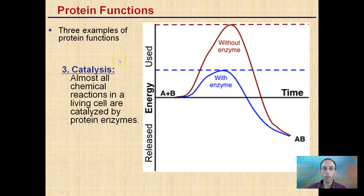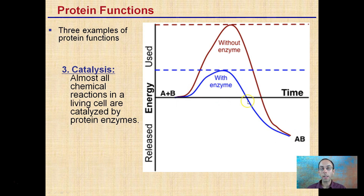Lastly, proteins can form catalysts. Almost all of the chemical reactions in a living cell are catalyzed by enzymes. What an enzyme does is reduce the amount of energy needed to reach an end product. To combine A with B without the enzyme takes a lot of energy before it produces the complex AB. With enzymes, it takes far less energy to produce the same end result. The time to produce the product is the same with or without the enzyme, but what is reduced is the amount of energy. Without enzymes, we would not be able to survive.